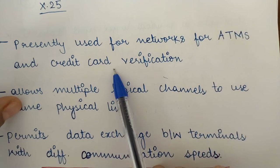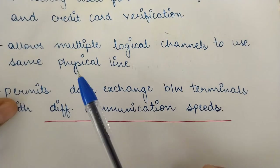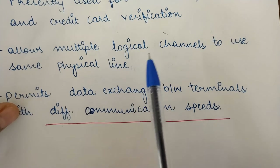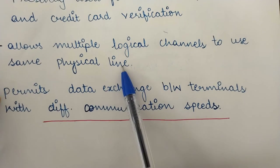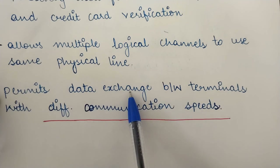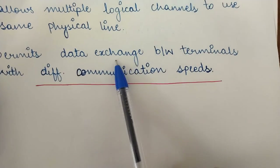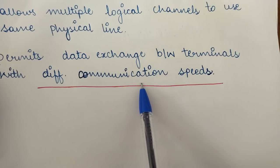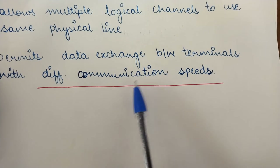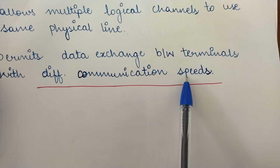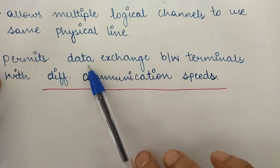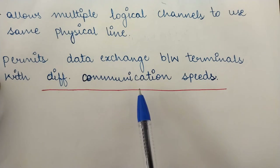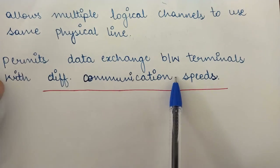The X.25 network allows multiple logical channels to use the same physical lines. It also permits the exchange of data between terminals with different communication speeds — for example, a fast sender with a slow receiver, or a slow sender with a fast receiver. Whatever the communication speed at different terminals, X.25 allows the exchange of data between them.